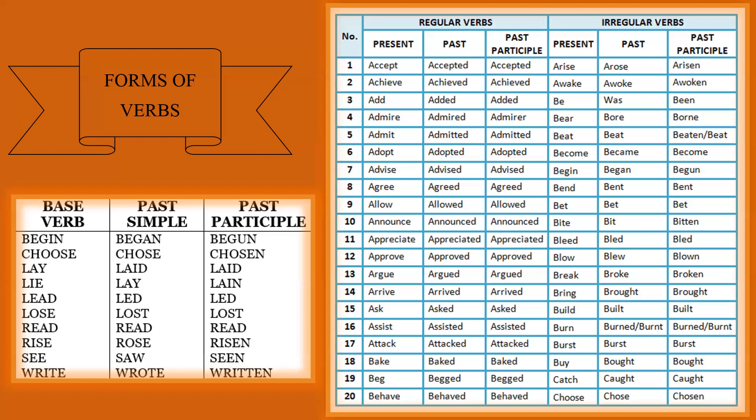Irregular verbs have different past participle forms. Here you have seen the three forms of verb. In the first table: begin is the base verb, began is past simple, and begun is the past participle form. Begin, began, begun. Choose, chose, chosen. Lay, laid, laid — and so on.